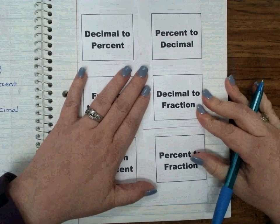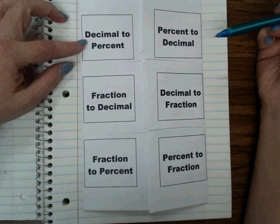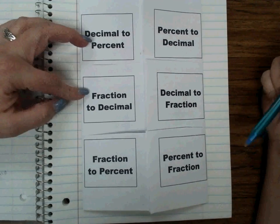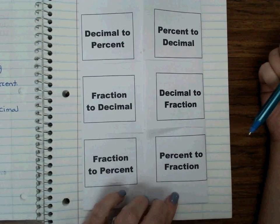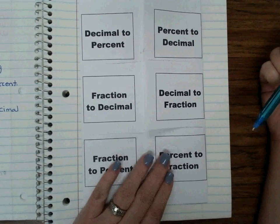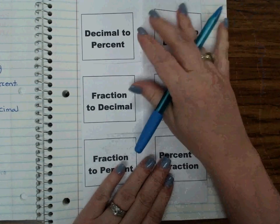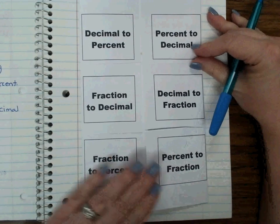Okay, so we have gone over decimals to percents, percents to decimals, fractions to decimals, decimals to fractions, fractions to percents, and percents to fractions. Use this foldable to help you solve these questions that we have coming up over the next couple days. Okay, over on the opposite side of your page, you have your WSQ.